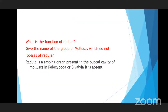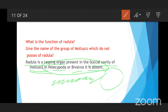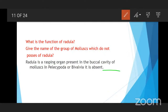What is the function of the radula? The radula is a masticatory organ present in the buccal cavity of molluscs, used for mastigatory rupturing of food. It is located in the oral surface of molluscs. In Pelecypoda or Bivalvia, the radula is absent — these classes do not possess a radula in their structure.